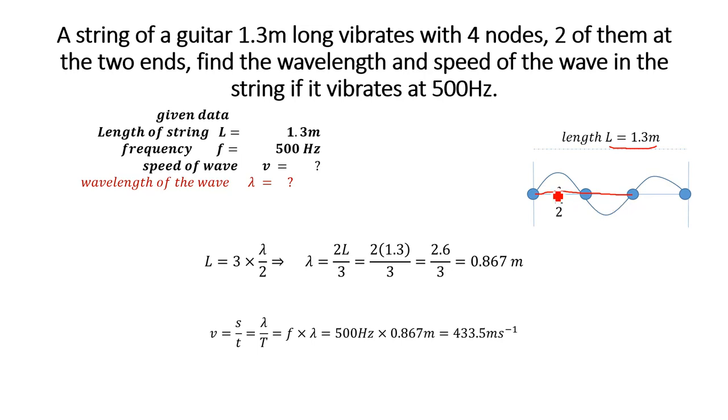So we have total three segments: segment 1, 2, and 3. The total length L is equal to 3 lambda divided by 2, where L represents the total length. Now in the numerical, it is given that we have to calculate the wavelength and speed of the wave if it vibrates at 500 Hertz.